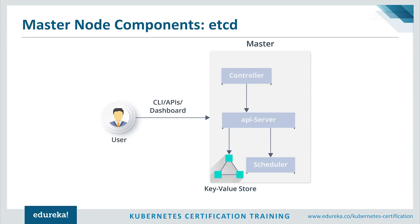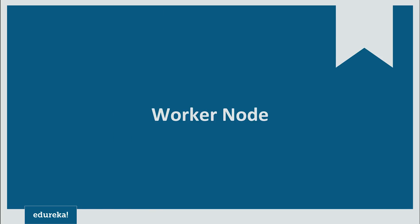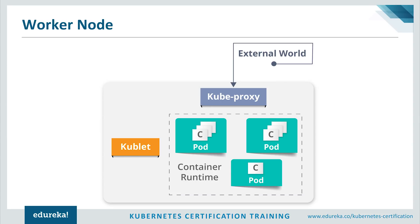Now let's move on to the worker node. A worker node is a machine, virtual machine, or physical server which runs applications using pods and is controlled by the master node. Pods are scheduled on the worker nodes, which have the necessary tools to run and connect them. A pod is the scheduling unit in Kubernetes — a logical collection of one or more containers which are always scheduled together. To access applications from the external world, we connect to the worker nodes, not the master nodes.